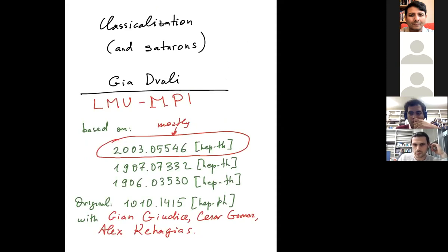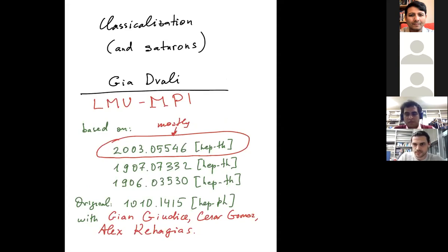The first speaker for this session is Guiaf Vanni from Munich, who will talk about classicalization and saturons. He thanks the organizers and notes the talk will be based on recent papers as well as original ideas developed with John Giudice, Cesar Gomez, and Alex Kehagias.